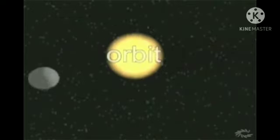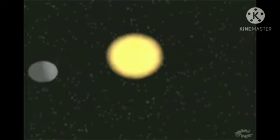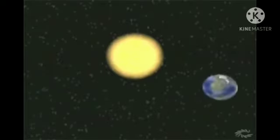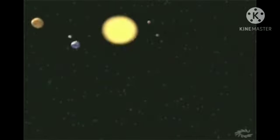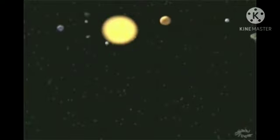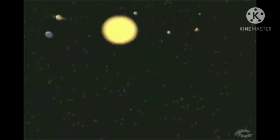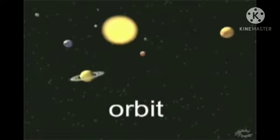An orbit is the name for the path that an object takes as it moves through space on a continuous course around a larger object. The Earth orbits the Sun, and so do the other planets in the solar system: Mercury, Venus, Earth, Mars, Jupiter, Saturn, Uranus, Neptune, and Pluto — all orbit the Sun, moving in a counterclockwise direction.